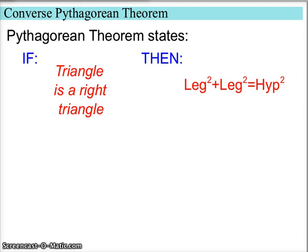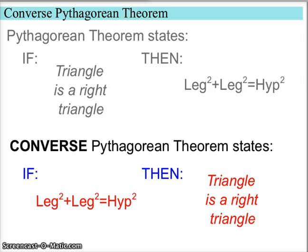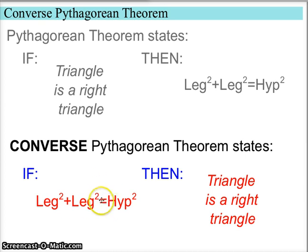Working backwards means if we have a triangle but we're not sure if it's actually a right triangle — we don't have angle measurements, we don't have a little square in the corner to indicate a right angle — we could work backwards. The converse of the Pythagorean Theorem says if you take your three sides and assume the longest side is the hypotenuse, and the sum of the squares of the two short sides equals the square of the longest side, then there must be a right angle and your triangle has to be a right triangle.